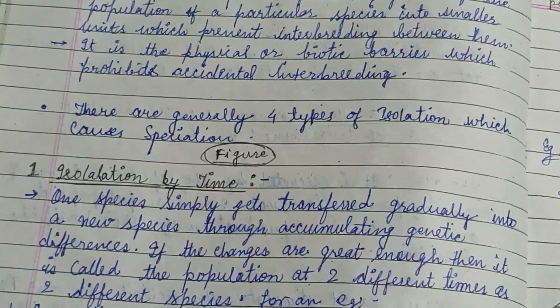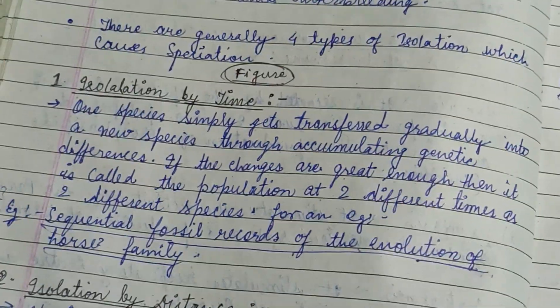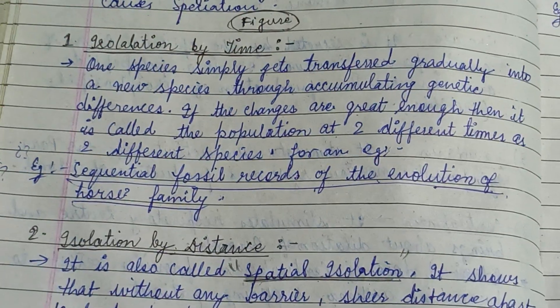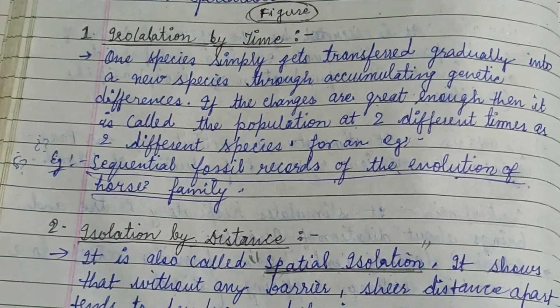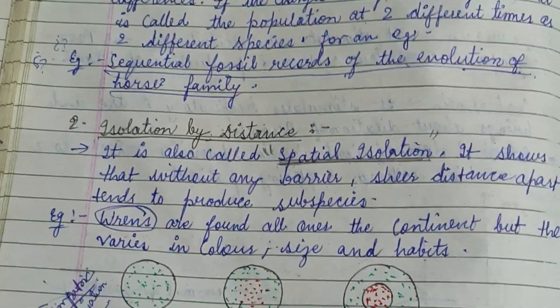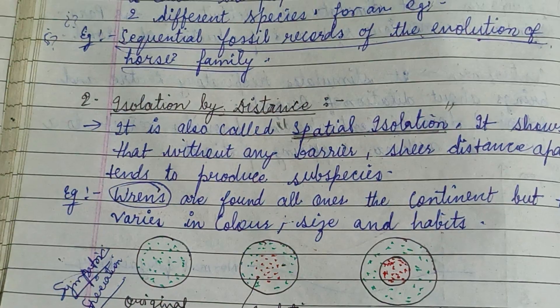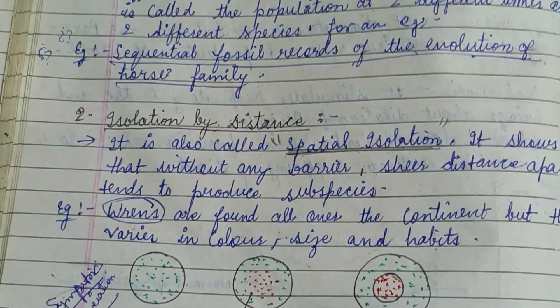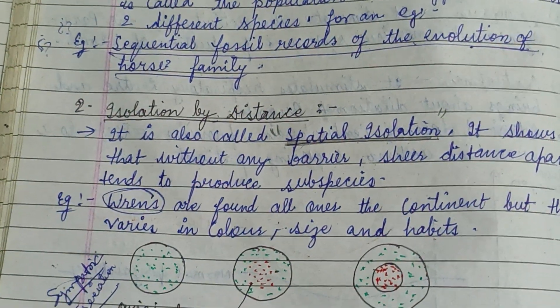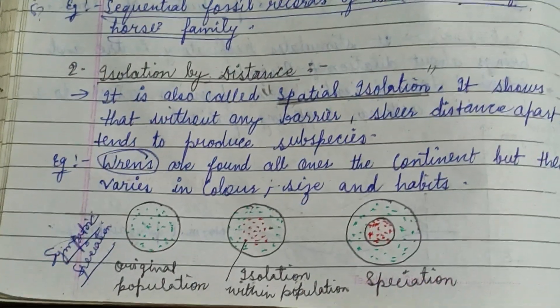Basically there are four types of isolation: isolation by time, isolation by distance, ecological isolation, and reproductive isolation.